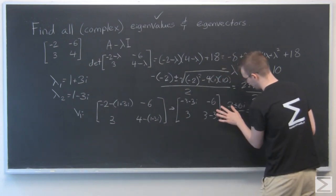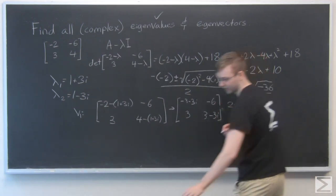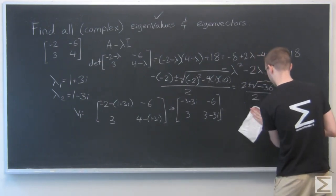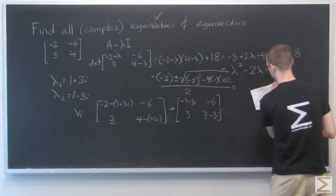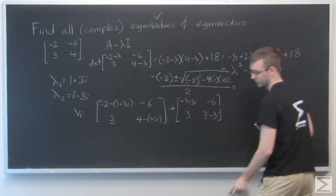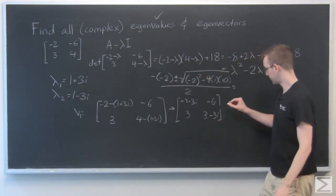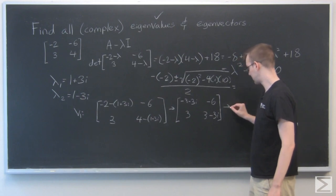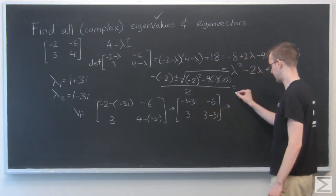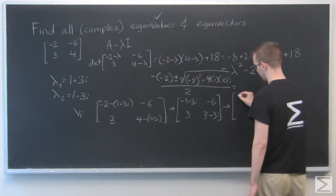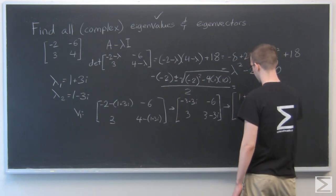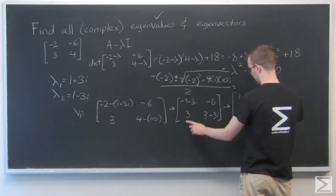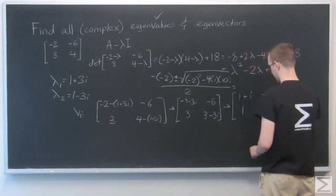All right. I don't want that to get in the way, so I'm going to erase this. OK. I'm going to simplify this matrix, just so it's easier to work with. This I can divide by negative 3. So that's 1 plus i minus 2. I can divide this by 3. 1 and 1 minus i.